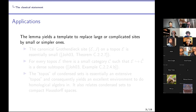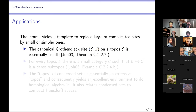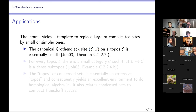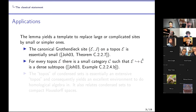Why is this useful? One classical application: you can show that the canonical site on a topos is essentially small. A topos is a large category, and you can look at the Grothendieck topology given by the jointly epic families on it. To show this is an essentially small site, you take a large enough kappa, embed the kappa-compact objects, and use the comparison lemma to construct a Grothendieck topology on that small category which retrieves E — and in particular the canonical site on E.